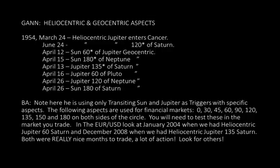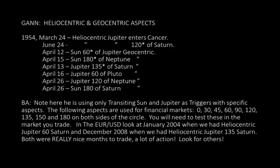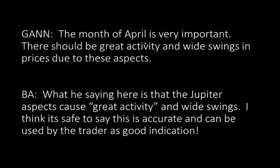In the Euro/US dollar, look at January 2004 when we had heliocentric Jupiter 60 degrees of Saturn, and December 2008 when we had heliocentric Jupiter 135 degrees of Saturn — both were really nice months to trade with a lot of action. Look for others. Note: for coffee, GAN is using Sun and Jupiter transiting aspects — that's important because it rules out a lot of stuff we don't have to sift through. Also, the month of April is very important — there should be great activity and wide swings in prices due to these aspects.